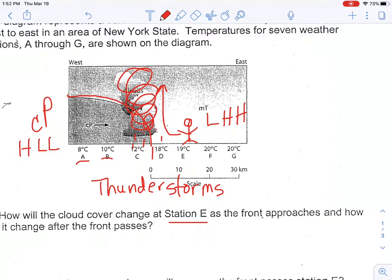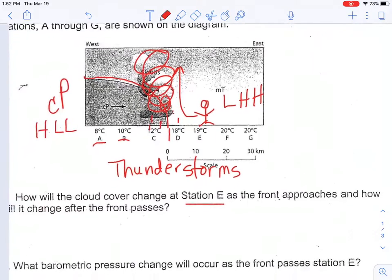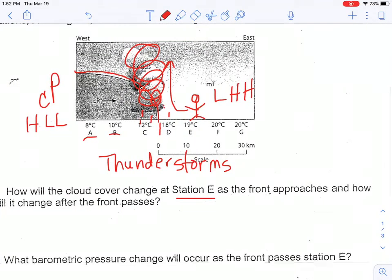If we look behind the cold front, we can see it says 8 or 10 degrees Celsius, so that's much colder, probably 20 degrees less. Question number one is: how will the cloud cover change at station E as the front approaches and how will it change after the front passes? So here I am at station E, right now I'm in pretty clear skies.